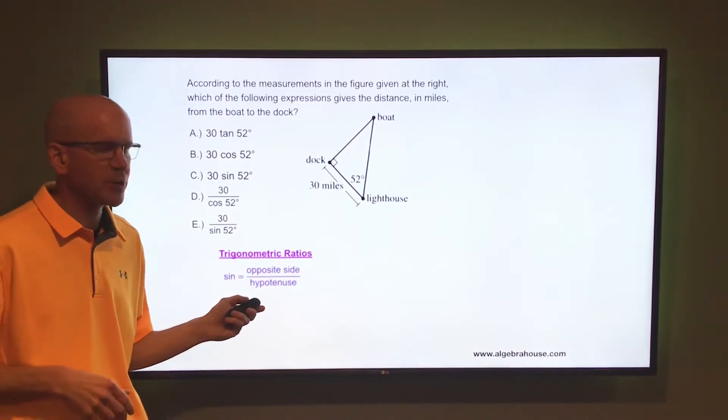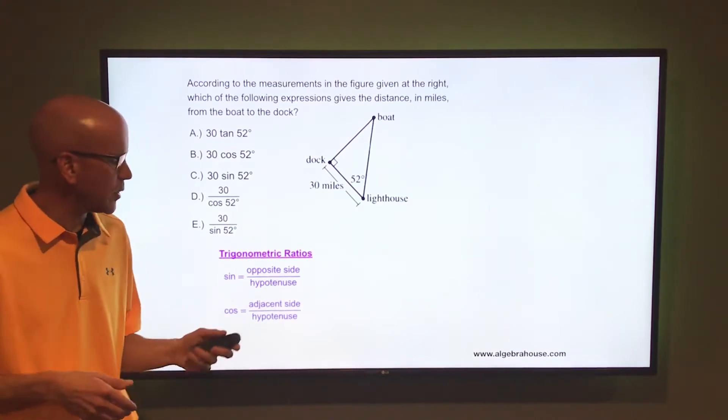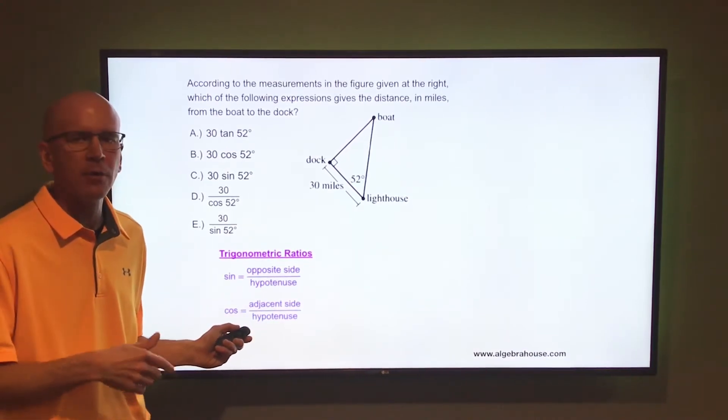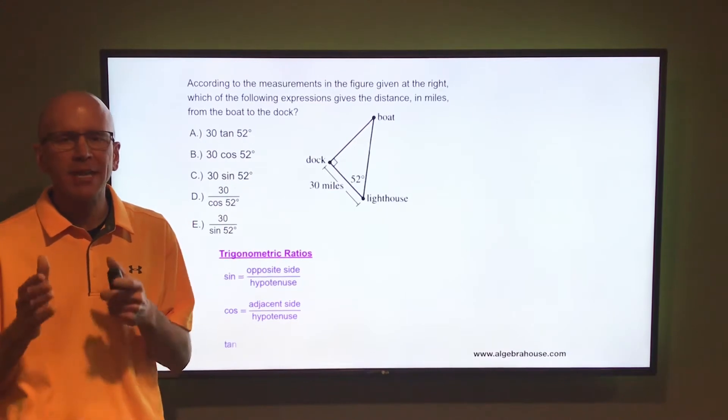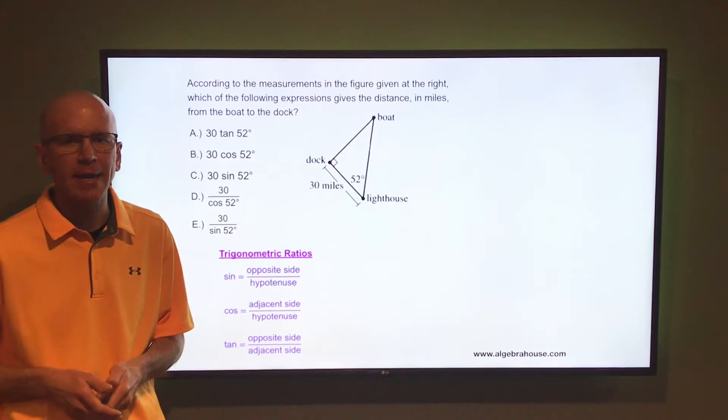The sine of an angle is the ratio of the side opposite that angle over the hypotenuse. The cosine of an angle is the ratio of the side adjacent to that angle over the hypotenuse. And the tangent of an angle is the ratio of the side opposite that angle over the side adjacent to that angle.